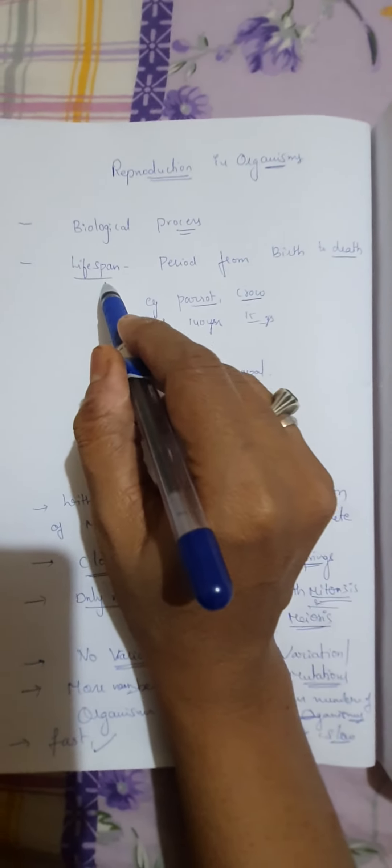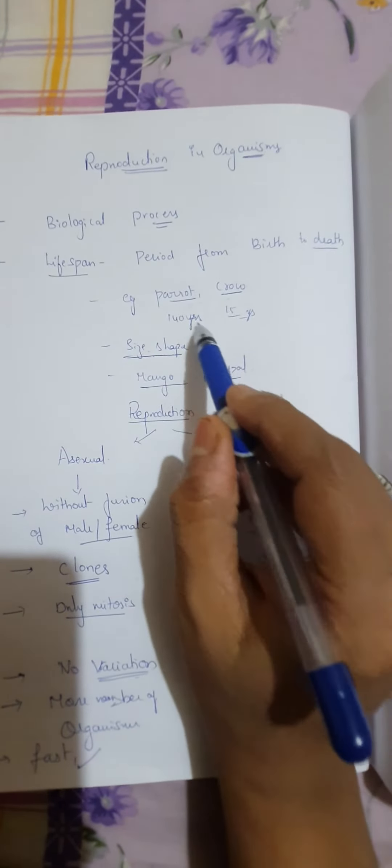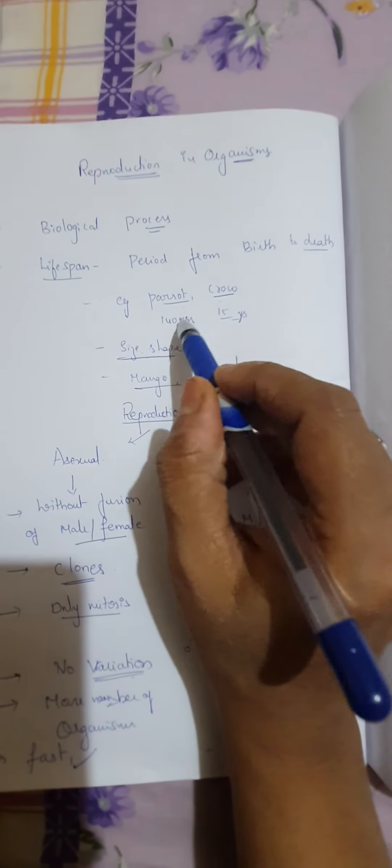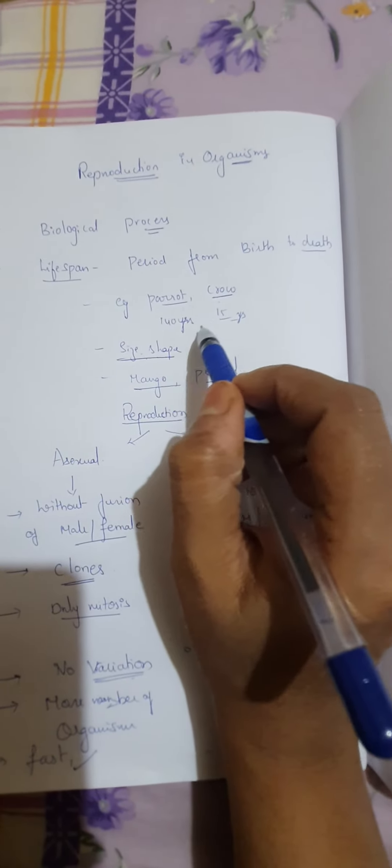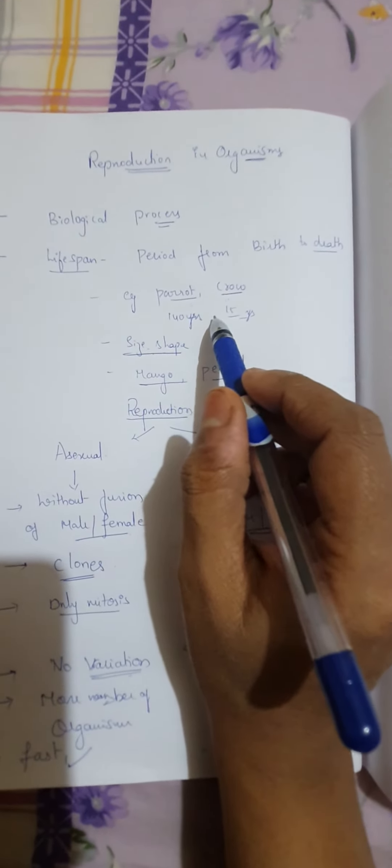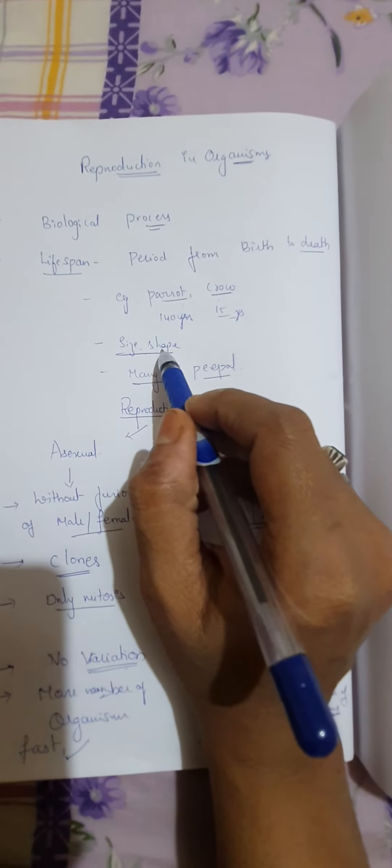Now here we see lifespan also. The period from birth to death of a living organism is called its lifespan. For example, parrot and crow. Parrot lives 140 years and crow lives 15 years. This is an approximate lifespan of an organism. And these lifespans are not dependent on the size and shape.